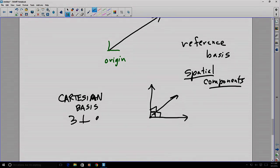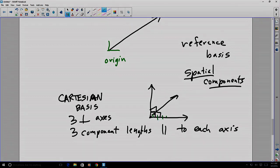Three perpendicular axes make up this basis. And then you would have three component lengths, which each of those component lengths being parallel to each axis. So you would have lengths to consider along your horizontal axis, lengths to consider along your vertical axis, and lengths to consider along the axis that goes into or out of the page. That would be a Cartesian basis and the three components associated with it.